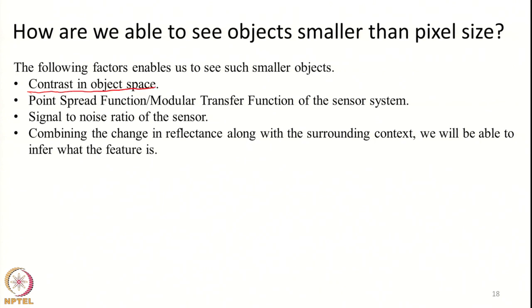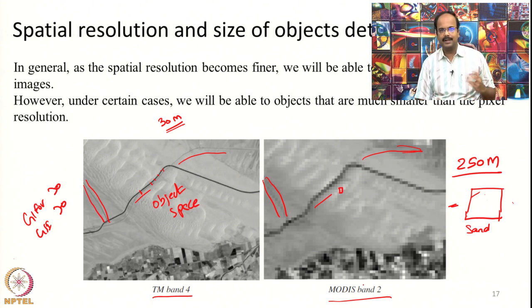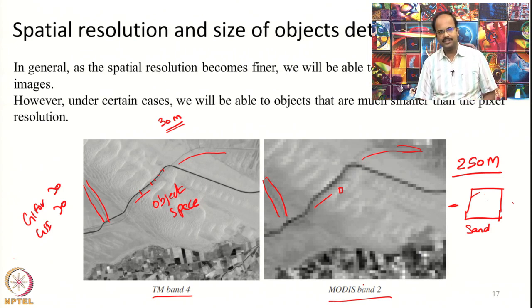What is contrast in the object space? Let us take one GIFOV element. The energy sensed by a single detector element is determined by what is coming out from each feature located within that particular GIFOV. Let us say one GIFOV is located entirely over pure sand. The entire GIFOV is filled with signals from sand — more or less uniform values. It will appear bright normally in visible bands, as sand has a somewhat brighter reflectance.